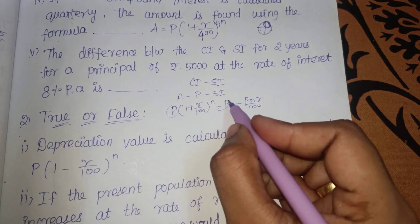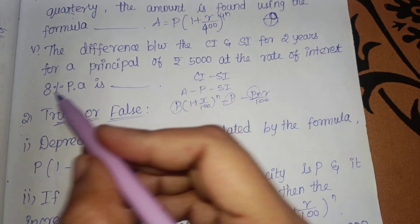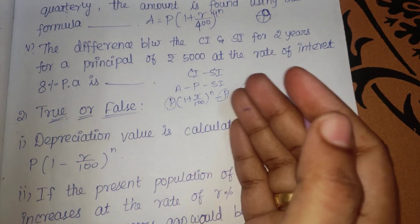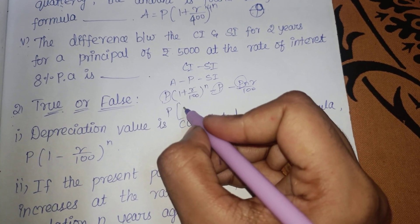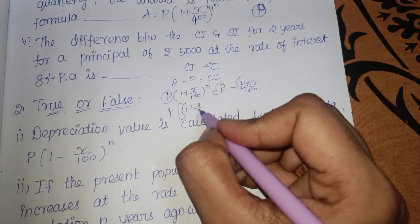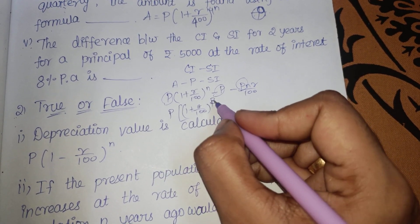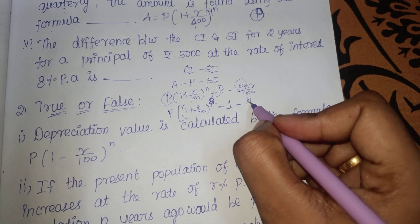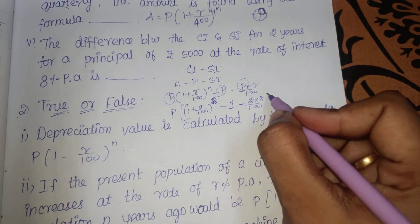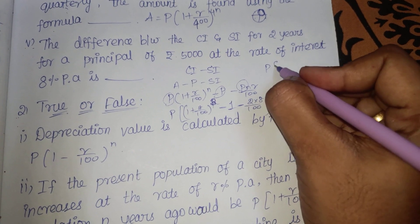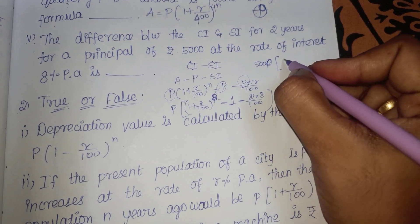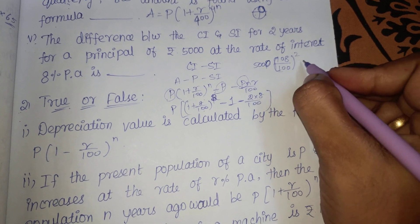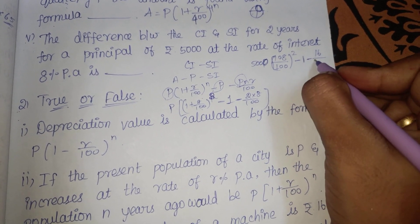For both, P is common. The value of N is 2, so it gives you 2 years. P is 5,000, R is 8. So 100 plus 8 is 108. So 108 by 100 whole squared, minus 1, minus 2 times 8 is 16, so 16 by 100. Now we compute the denominator: 5,000 into 108 squared divided by 100 squared.